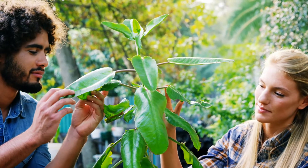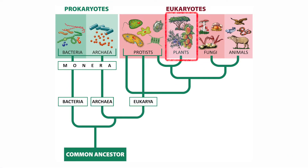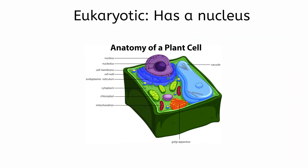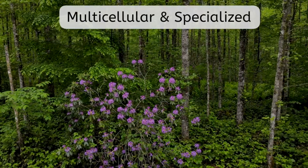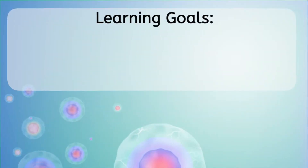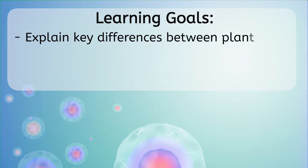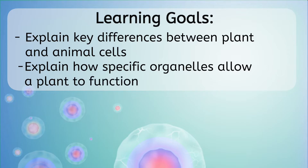We do have a few things in common with plants though. Just like us, plant cells are eukaryotic, meaning they have a nucleus to hold their DNA. And plant cells have many of the same organelles as ours — they just happen to have a few extra ones that we are missing. Lucky them! Just like animals, most plants are also multicellular and have specialized cells to perform different functions. Throughout our lesson today, we will explain key differences between plant and animal cells and explain how specific organelles allow a plant to function.